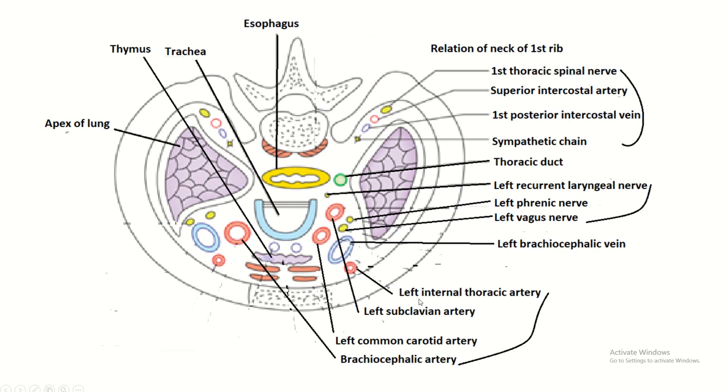These are the arteries passed through the thoracic inlet: left internal thoracic artery, left subclavian artery, and this is the left common carotid artery, and this is the brachiocephalic artery. The branches of the brachiocephalic artery are the right subclavian artery and right common carotid artery.